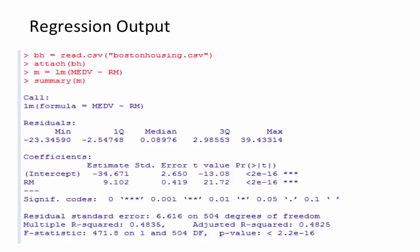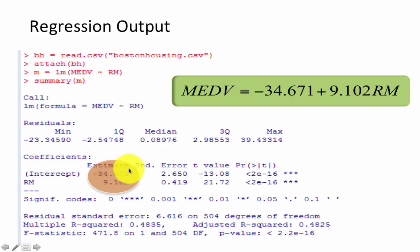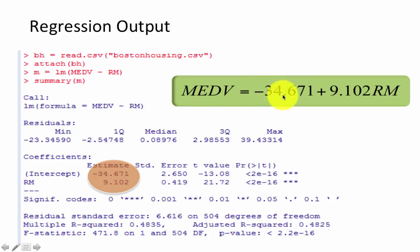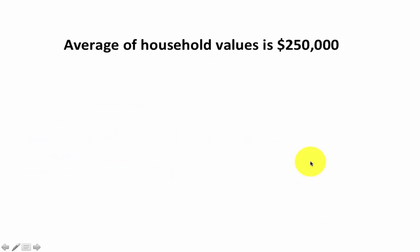This is essentially how linear regression works. We have the two coefficients, beta-zero and beta-one. In this example, we are looking at the Boston housing dataset, so the target attribute is median value and the predictor attribute is Rm, the number of rooms. Therefore, the regression equation is: median value equals minus 34.671 plus 9.102 times Rm.